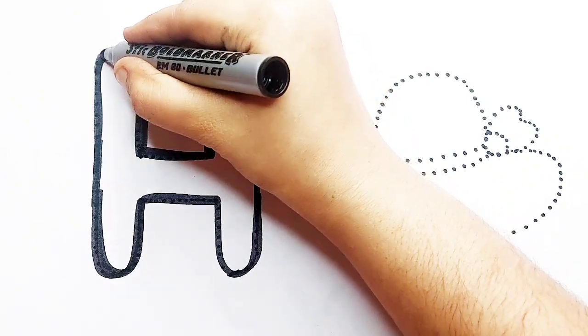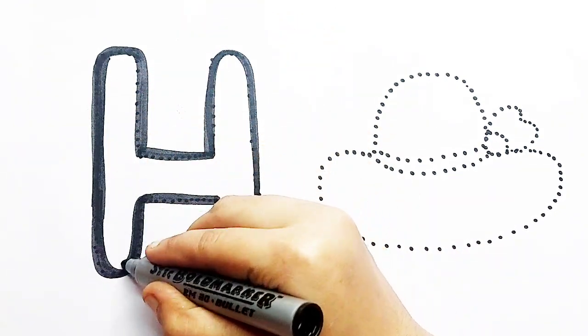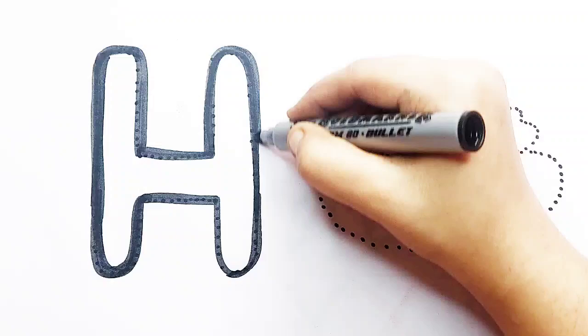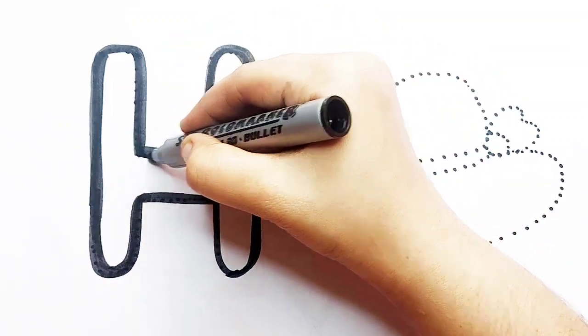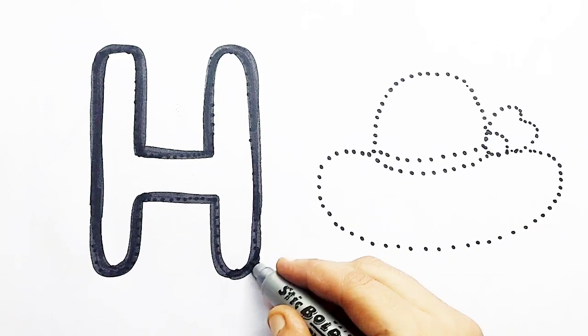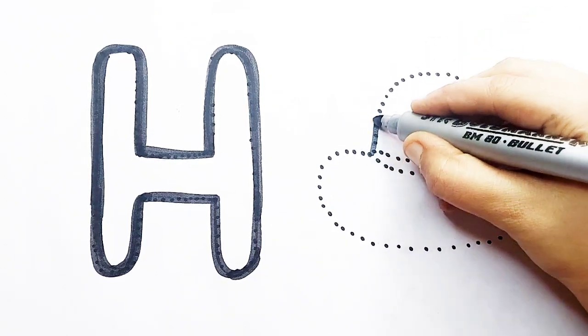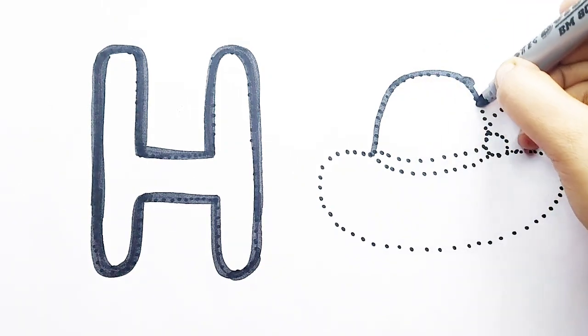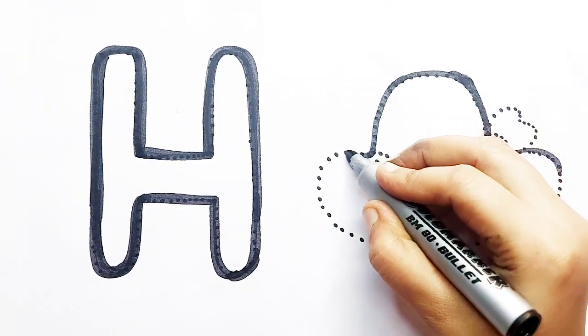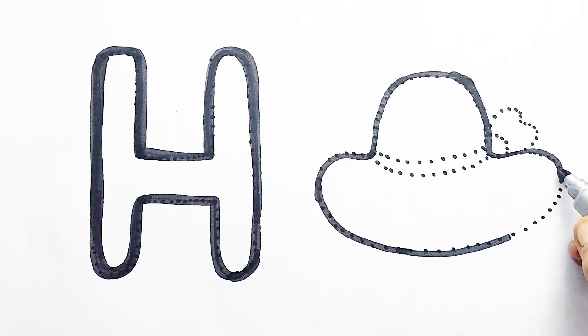Letter H for hat, now draw the hat. Now I know my ABCs, next time won't you sing with me. H for hat, now draw the hat. Ready, start. Hat, hat, hat. Wow, draw faster.